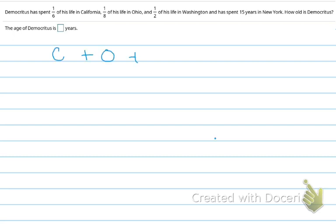Let's set up an equation. It's the years in California, plus the years in Ohio, plus the years in Washington, plus the years in New York. That's his whole life. So I've set up an equation relating all of those.